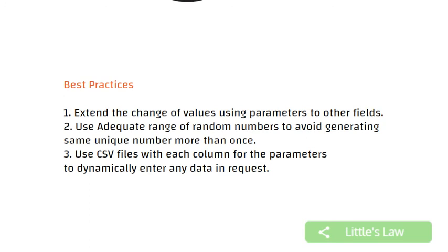Some further notes about doing this: we can easily extend this so that we can make the other fields unique as well. It's always important to use an adequate range of random numbers — using a 10-digit random number range will allow you to run with thousands of users and be extremely unique. This also goes for using a large set of possible characters to generate a random string for the email field. If you need something more substantial or would like to use some pre-prepared data, you are able to use CSV files with each column being available as a parameter that can be used dynamically in any request.